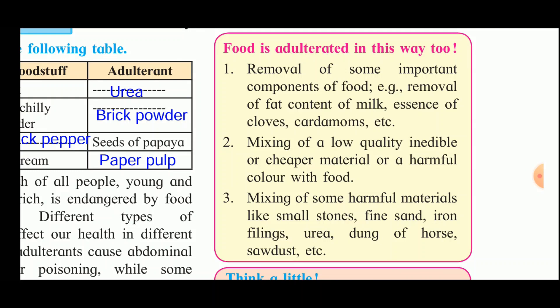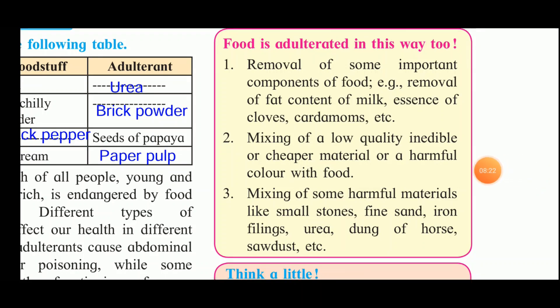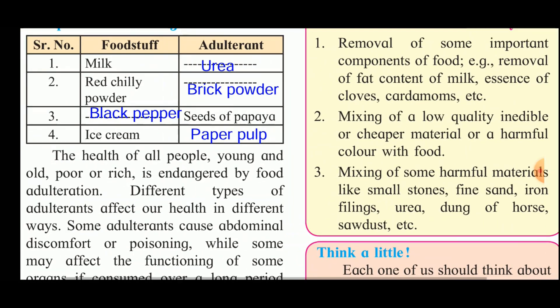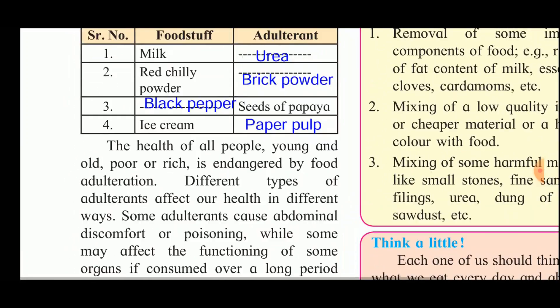Other forms of adulteration include mixing of low-quality, inedible, or cheaper materials or harmful colours with food, as well as mixing of harmful materials like small stones, fine sand, iron filings, urea, horse dung, and sawdust into food products.